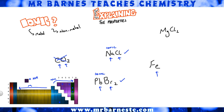Fe: straight away I've got a metal but there's nothing else — no nonmetal — so Fe is not ionic. MgCl2: magnesium is group 2, a metal; chlorine is group 7, a nonmetal. So it's ionic.